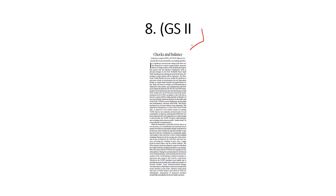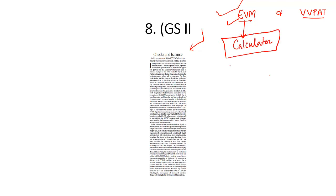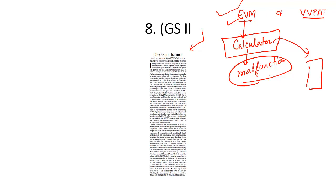Now the last editorial: 'Checks and Balance,' about Electronic Voting Machines and VVPAT — Voter Verifiable Paper Audit Trail. EVMs have been attacked by political parties who lose elections, blaming EVM hacking. But the Indian EVM is like a calculator — it cannot be hacked. It may malfunction, just as a calculator can malfunction, and then we replace it. The biggest strength of EVMs is that invalid votes have been eradicated.